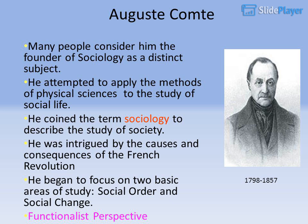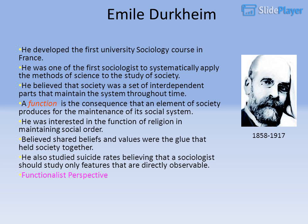Functionalist Perspective, 1798–1857. Emile Durkheim: He developed the first university sociology course in France and was one of the first sociologists to systematically apply the methods of science to the study of society. He believed that society was a set of interdependent parts that maintained the system throughout time. A function is the consequence that an element of society produces for the maintenance of its social system. He was interested in the function of religion in maintaining social order and believed shared beliefs and values were the glue that held society together. He also studied suicide rates, believing that a sociologist should study only features that are directly observable.